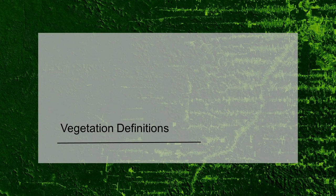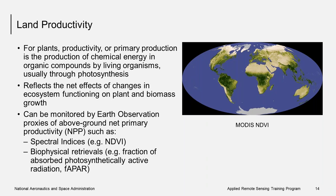I will discuss some vegetation definitions and how satellite earth observations can be used to measure these sub-indicators. Land productivity for plants refers to the production of chemical energy in organic compounds by living organisms, usually through photosynthesis. It often reflects the net effects of changes in ecosystem functioning on plant and biomass growth. Land productivity can be calculated from long-term time series of earth observation data on net primary productivity to identify areas of declining greenness as an early warning of possible land degradation. Satellite earth observations can be used to measure proxies of NPP such as NDVI or biophysical retrieval such as the fraction of absorbed photosynthetically active radiation.